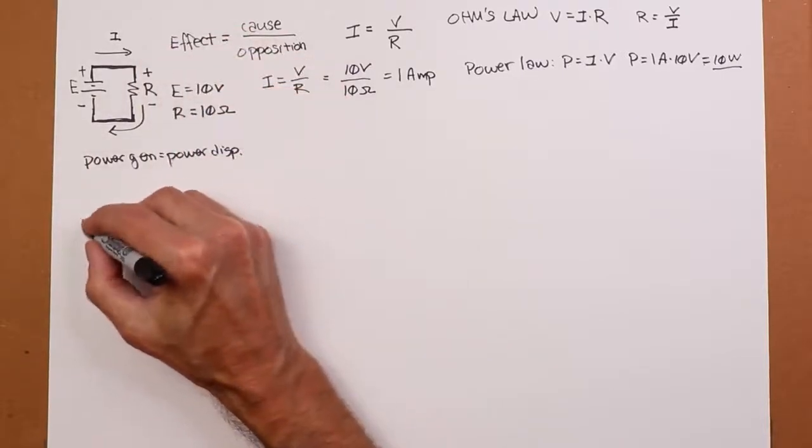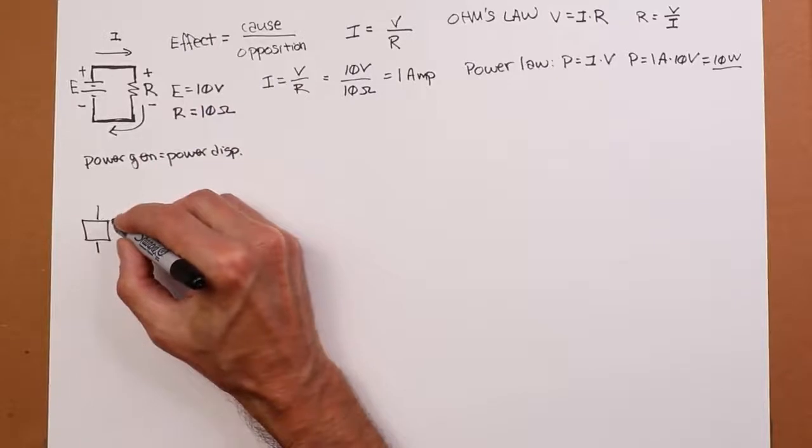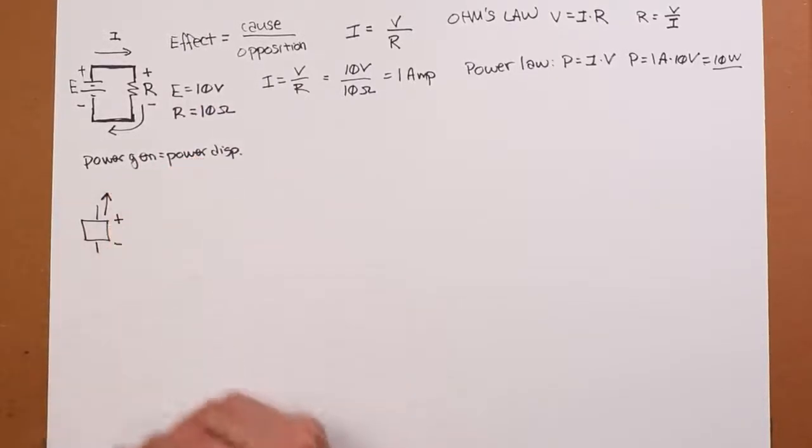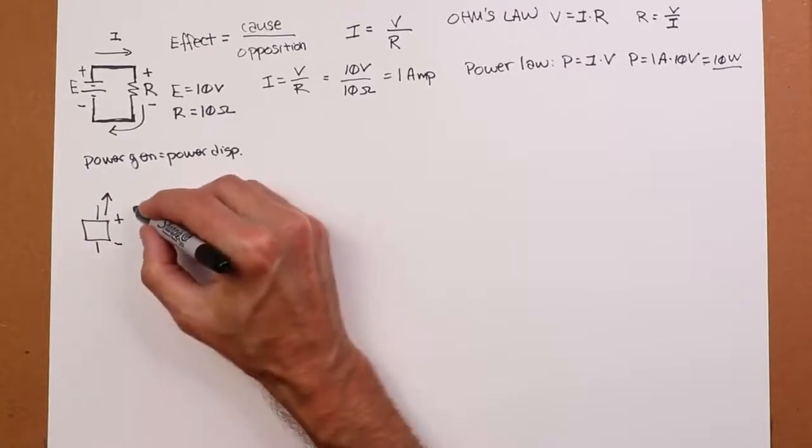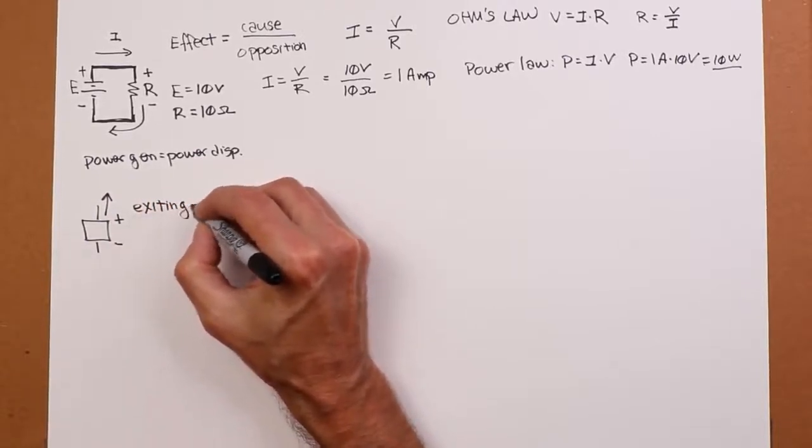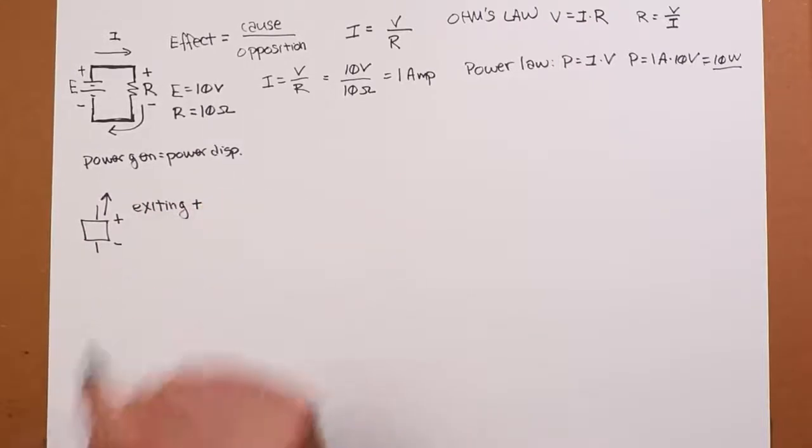How do you know if something's generating or dissipating? Look at the polarities. So if I have a device like this, and the polarity plus to minus top to bottom, and the current is exiting, exiting plus, that's power generation.